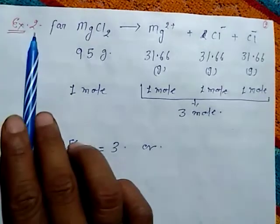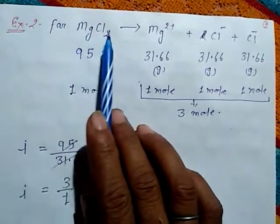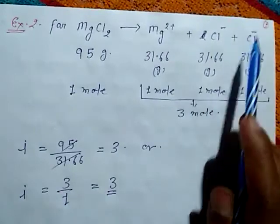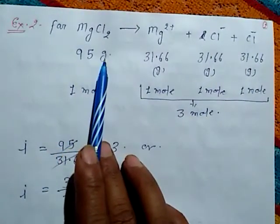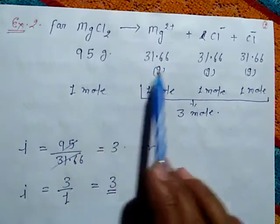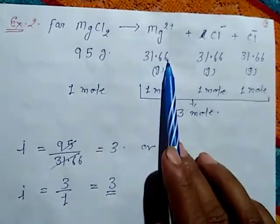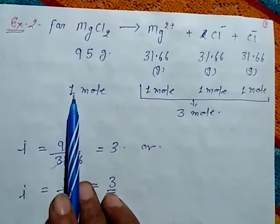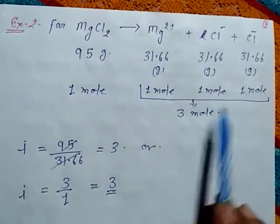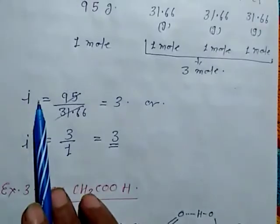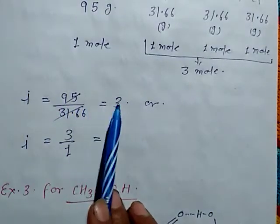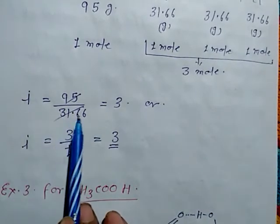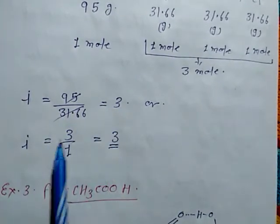For the next example, MgCl₂: MgCl₂ → Mg²⁺ + 2Cl⁻. The molar mass of MgCl₂ is 95 g and the abnormal molar mass is 31.66 g. The number of moles of solute before ionization is 1; after ionization it is 3. The Van't Hoff factor i = 95 / 31.66 = 3, or i = 3/1 = 3.